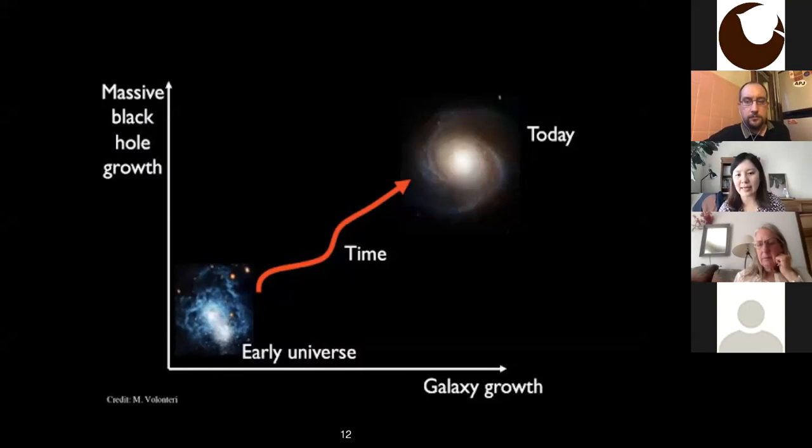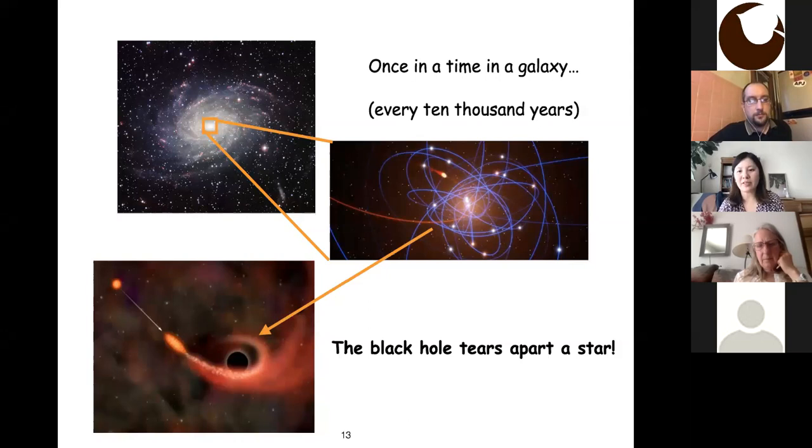It is actually a very hot topic in astronomy these days to study how the black holes and galaxies grow together since early universe until the way they seem these days. And in order to study this, we need to know, we need to be able to probe this black holes far away to know their properties. And how can we do that?